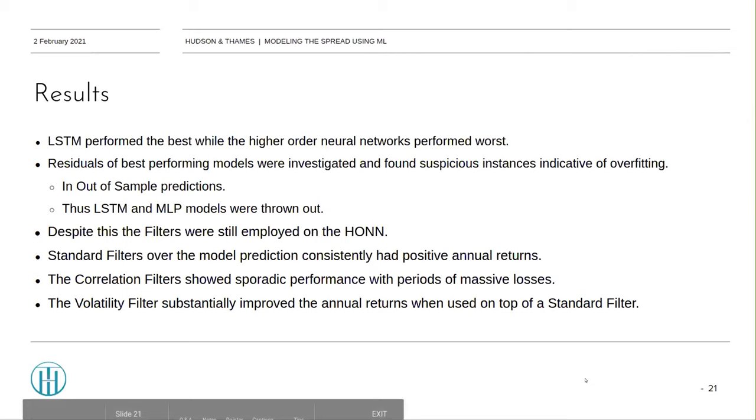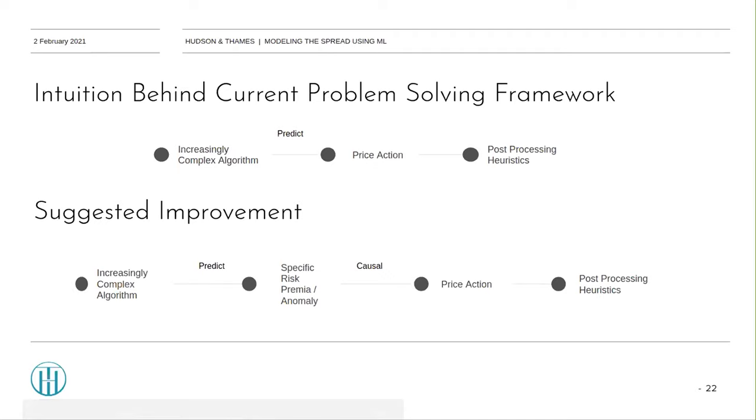Intuition behind the current problem-solving framework. The current framework is as follows: basically, using increasingly complex algorithms with borderline random pseudo-informative time series features to predict price action with no actual foundational hypothesis to support the outcome. This approach, at least in this implementation, did not work well. A better approach, in my opinion, is to try and predict specific anomalies, where the interaction between the specific anomaly and price, preferably, is linear and intuitively causal.